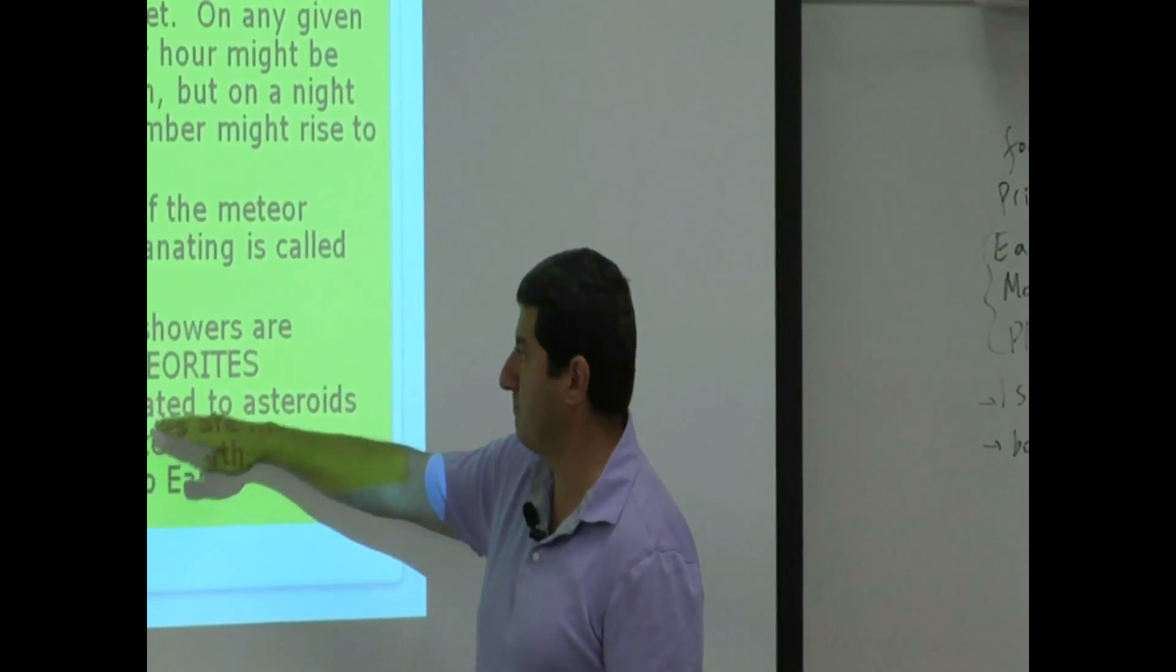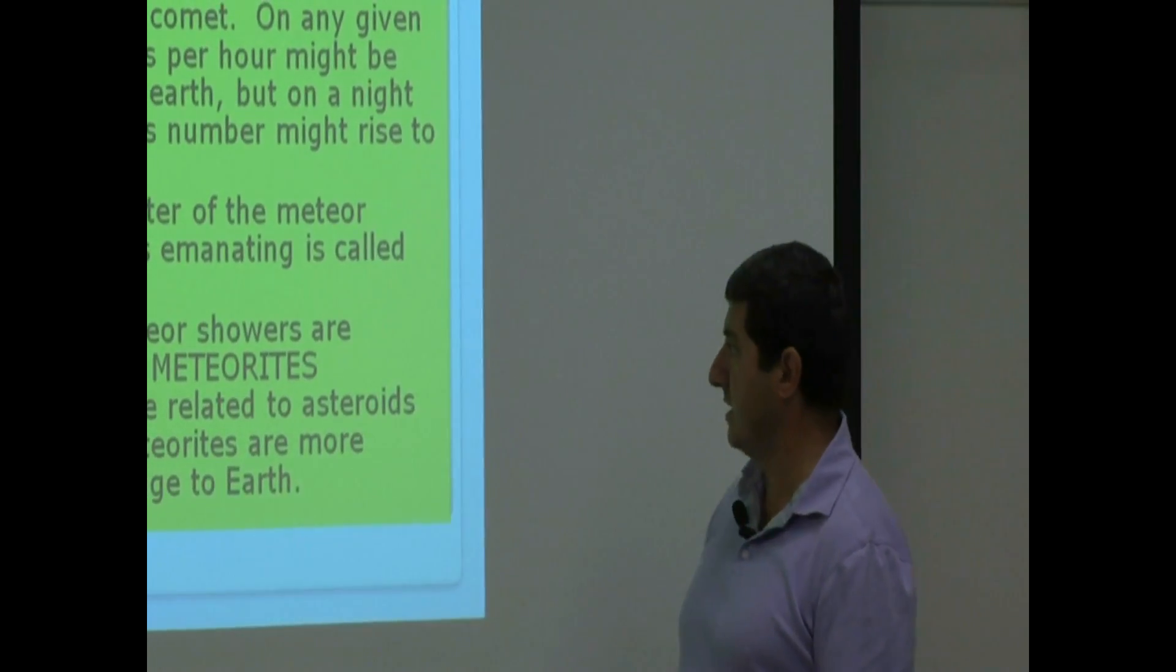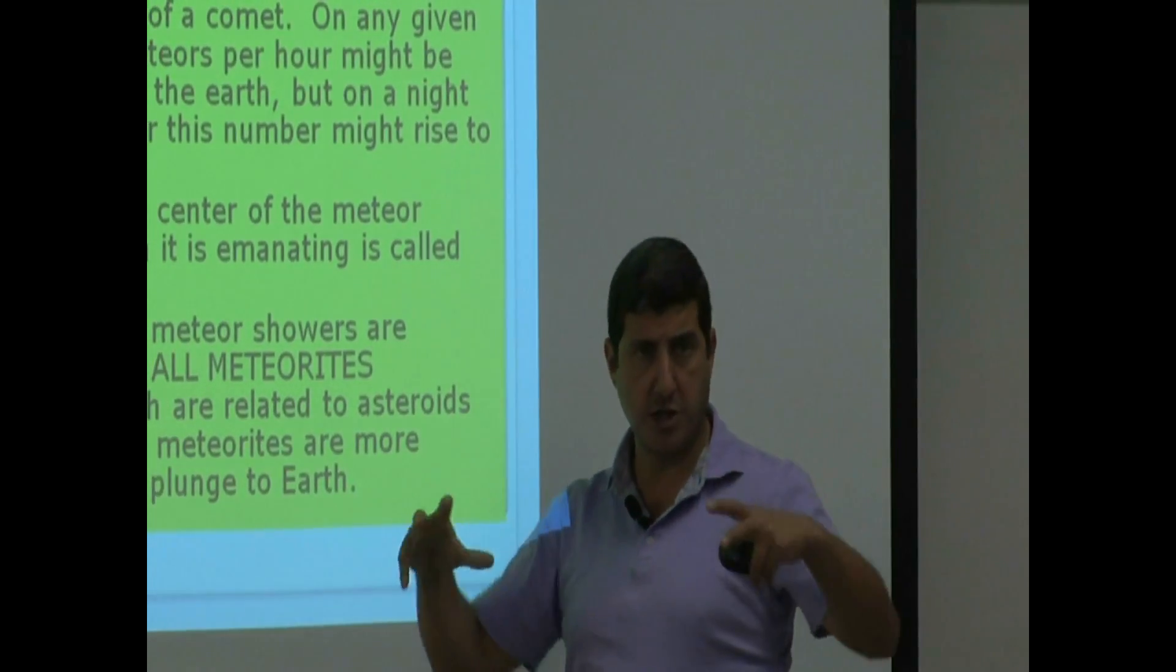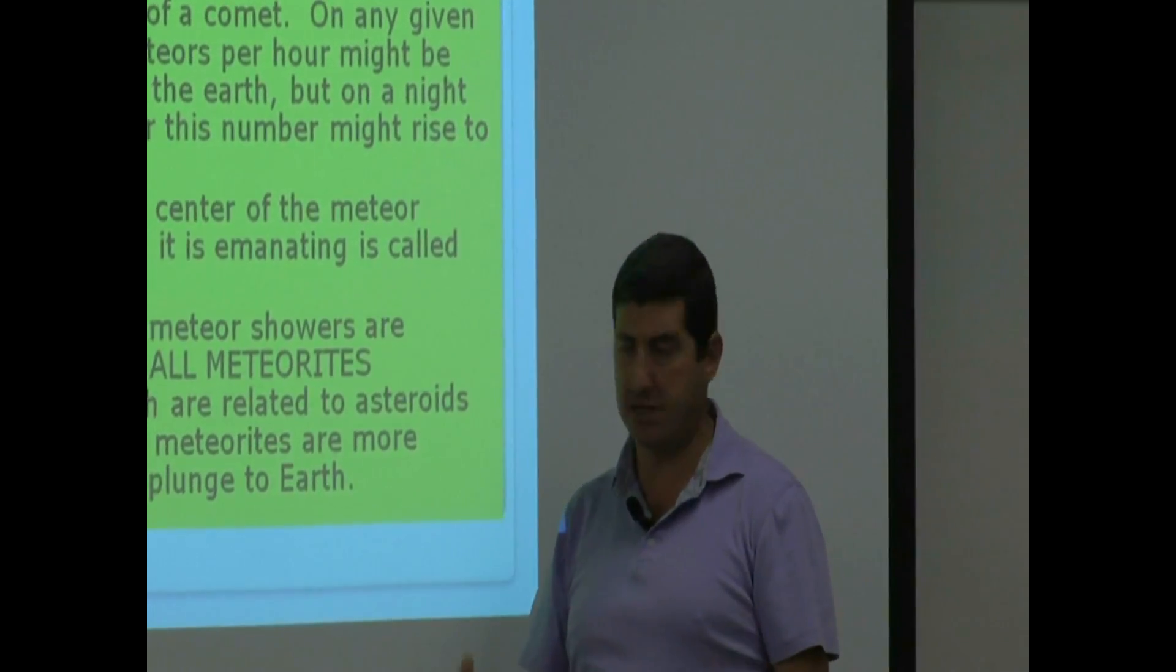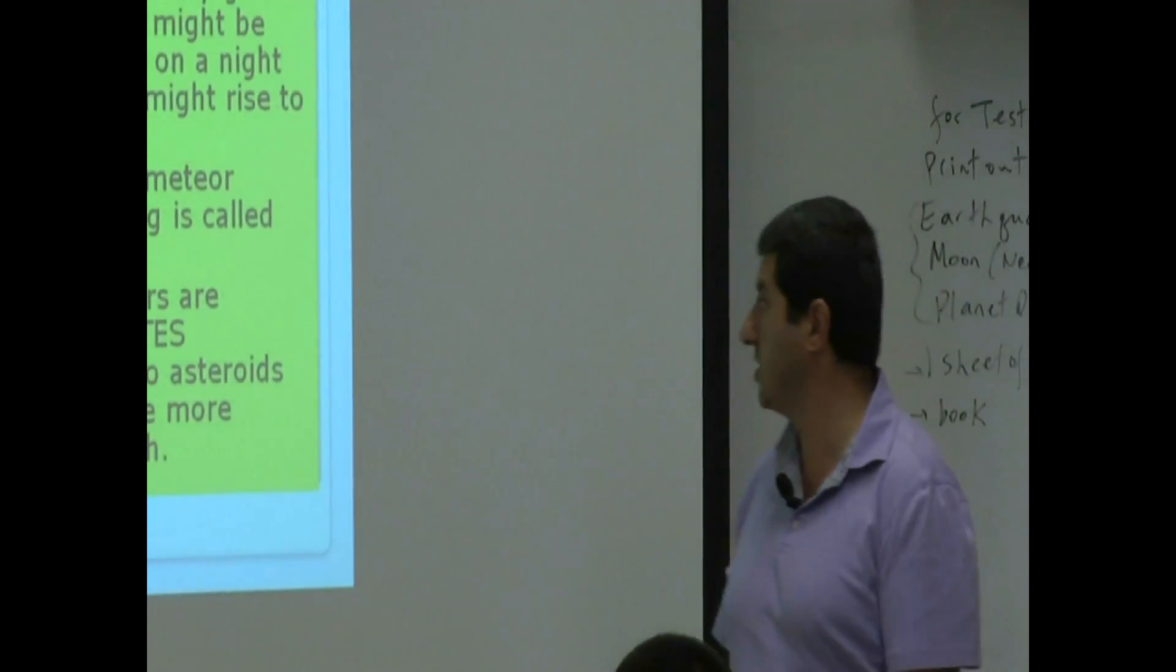So it says here, all meteorites discovered on Earth are related to asteroids. Why? Because asteroid meteorites are more robust. They're bigger, they're more robust than comet meteorites. And they will most likely survive the fiery plunge to the Earth.